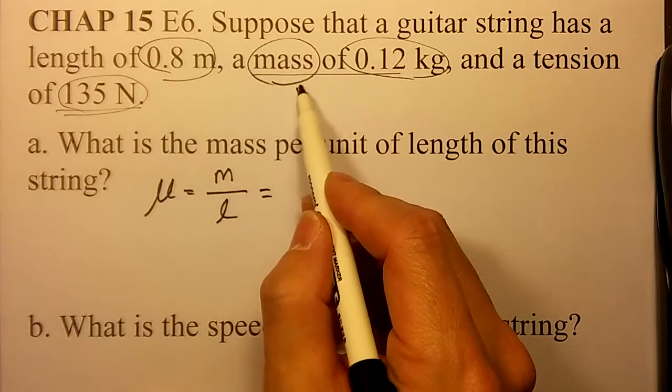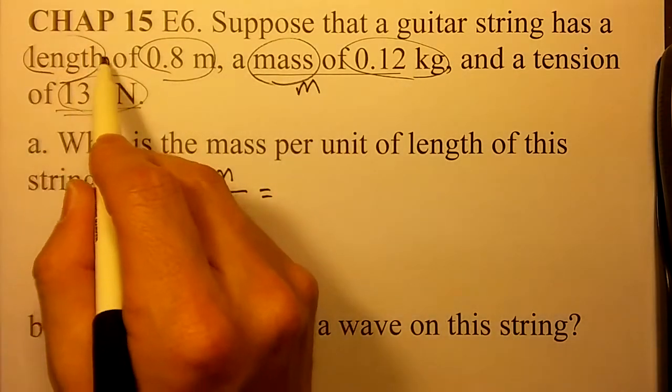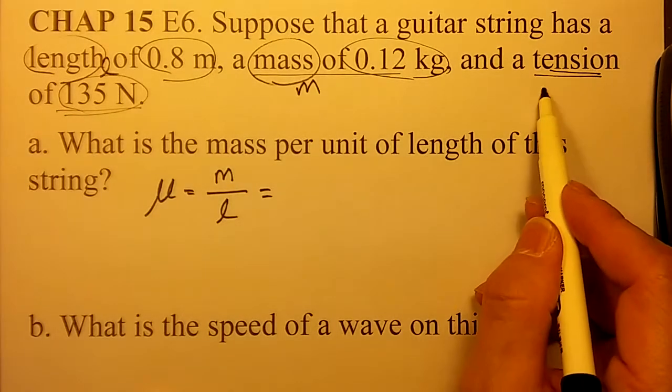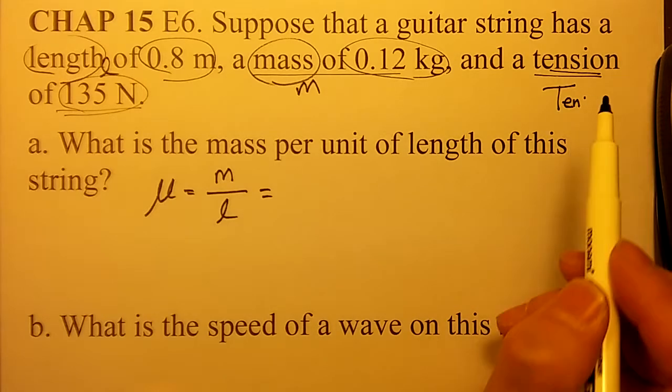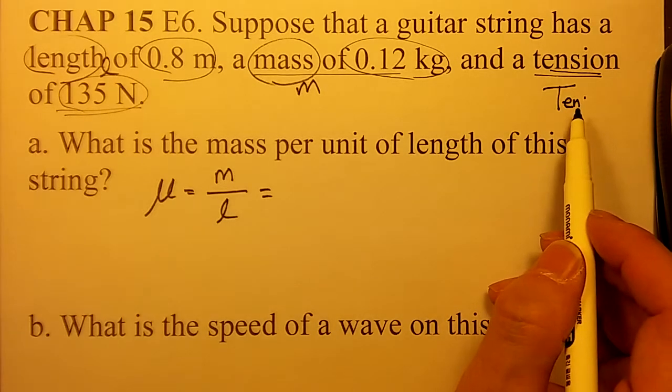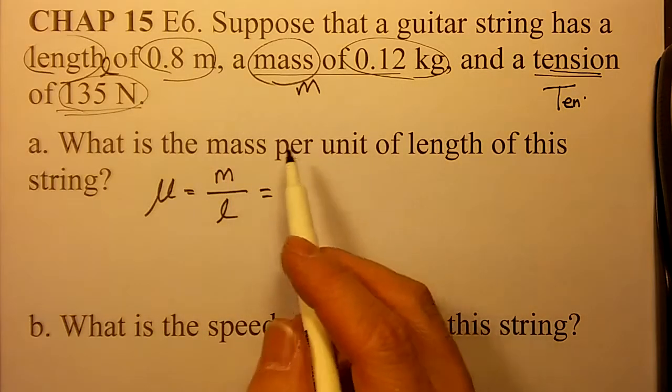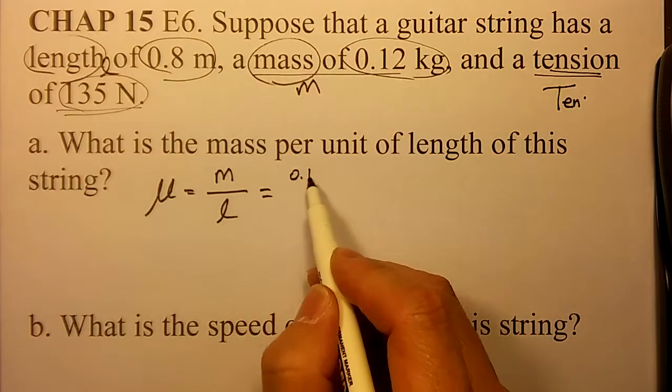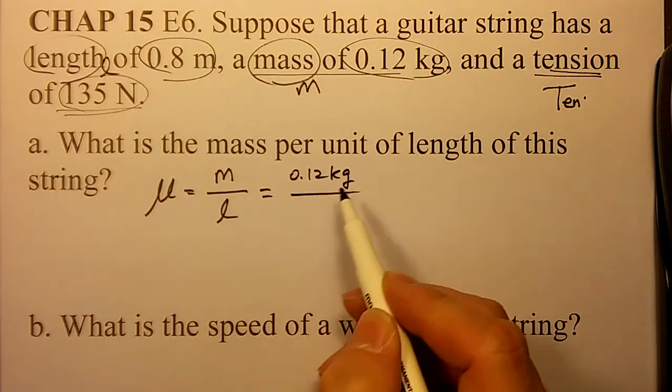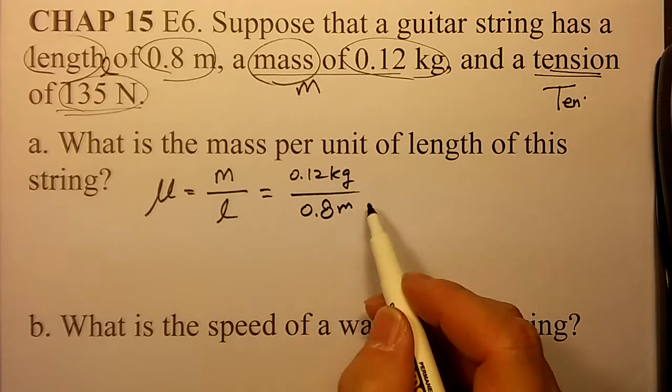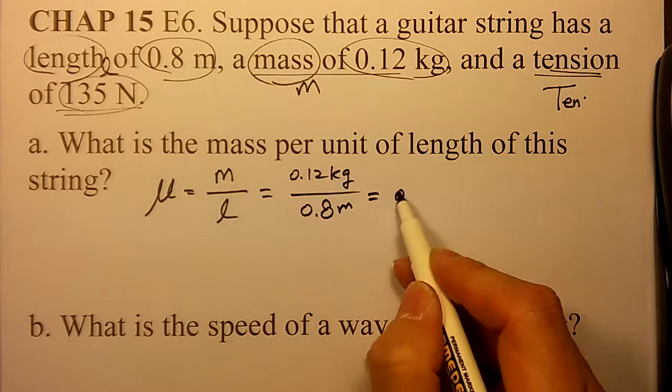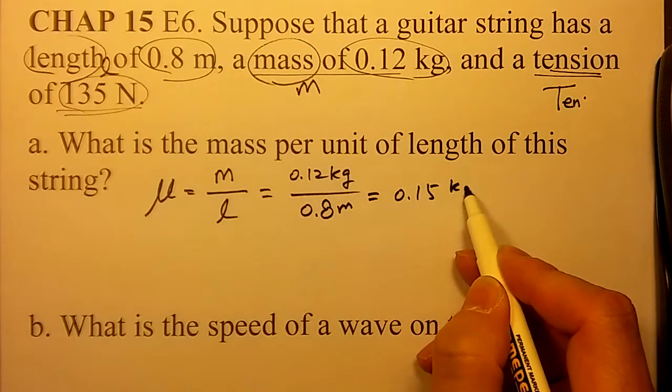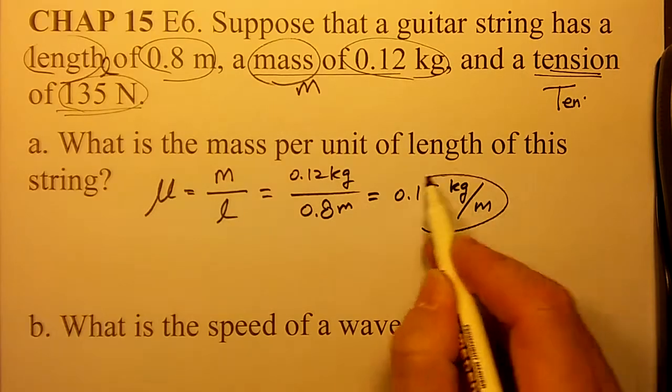Your mass is m, your length is l, and then your tension is tension. Then, your m is 0.12 kilogram and your length is 0.8 meter. So, you will calculate 0.12 divided by 0.8 equals 0.15 kilogram per meter as density.